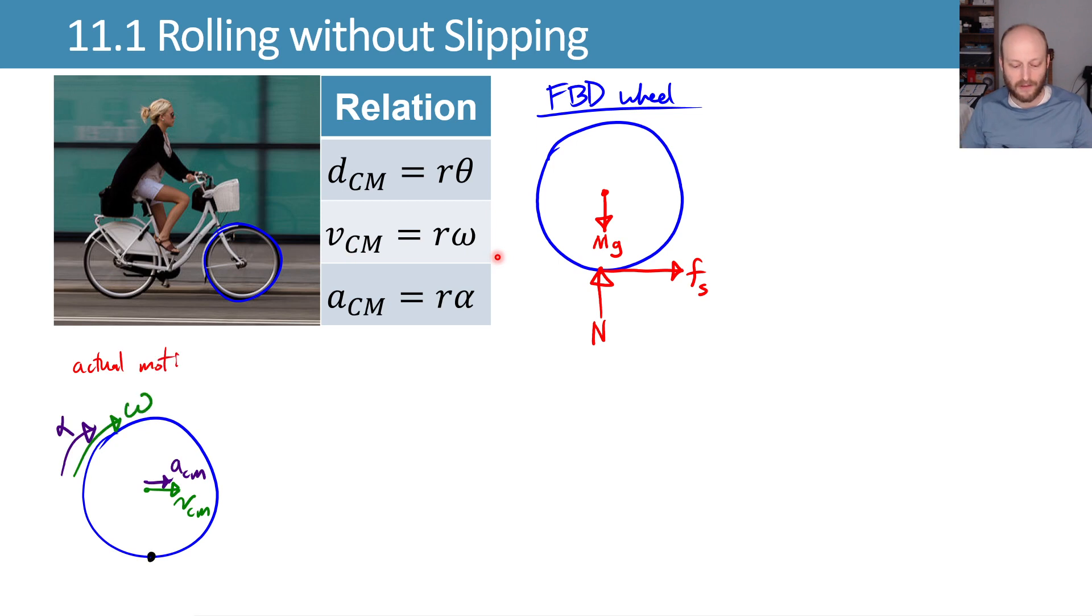Our actual motion looks something like this, where the wheel is spinning and the velocity of the center of mass is translating along at the same time as the wheel spins.